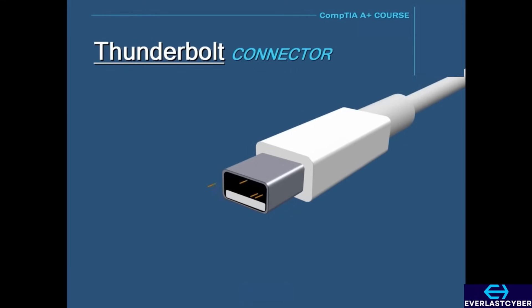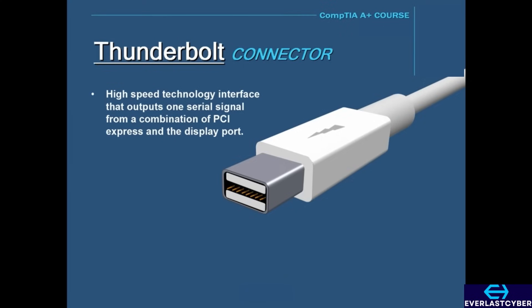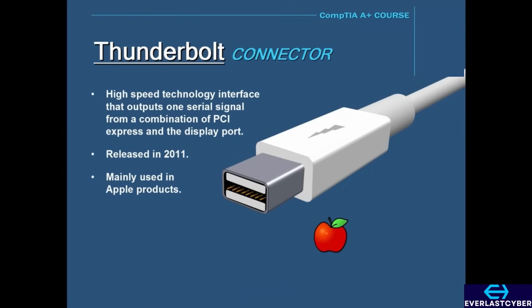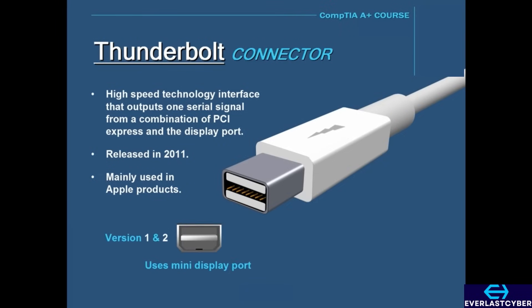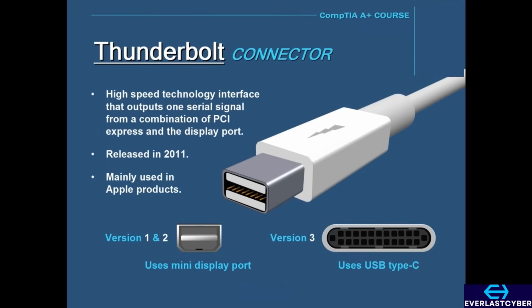A newer type of interface for attaching external peripherals is called Thunderbolt. Thunderbolt is a high-speed technology interface that outputs one serial signal from a combination of PCI Express and DisplayPort. It was released in 2011, was mainly used in Apple products, and has since become available to PCs. There are three different versions of Thunderbolt: versions 1 and 2 use the same connector as a Mini DisplayPort, and version 3 uses a USB Type-C connector.